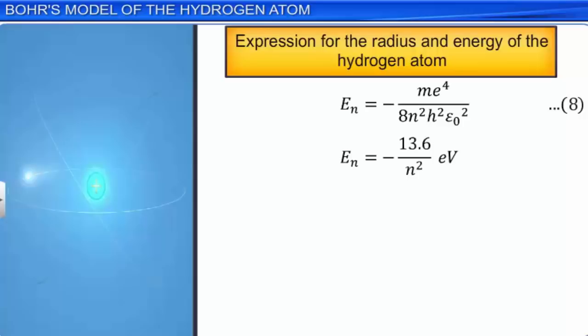Substituting n = 1 in equation 9, we get the energy of the first orbit, E₁ = −13.6 eV. This is the lowest energy state of the atom, called the ground state. Thus, the minimum energy required to remove the electron from the ground state is 13.6 eV. This is called the ionization energy of the hydrogen atom.